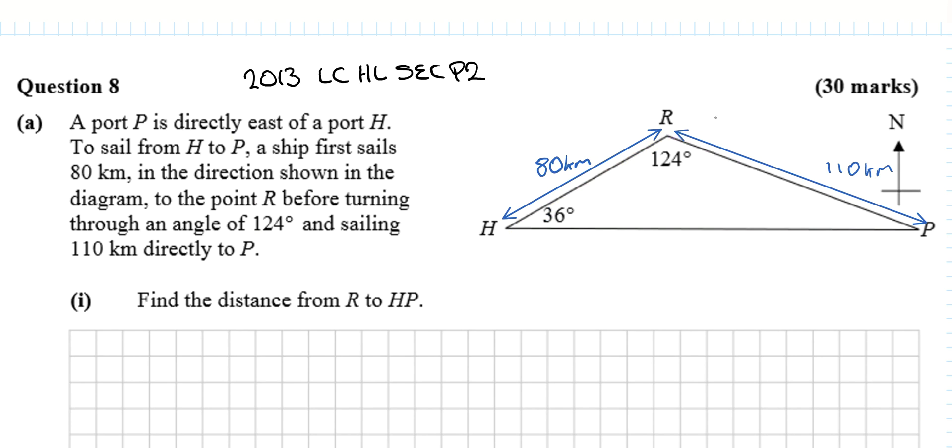But we'll use the diagram and go with 124 degrees. This distance is 110. It asks us to find the distance from R to HP, the shortest distance, which is the perpendicular distance.